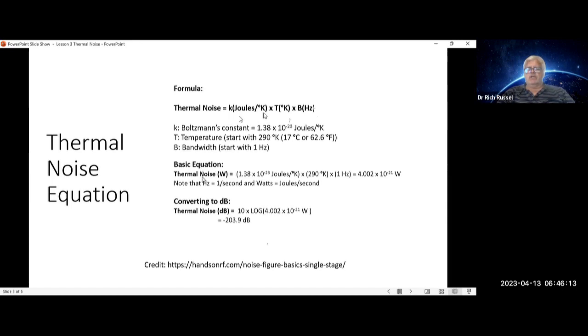So the basic equation result you get in watts is equal to 1.38 times 10 to the minus 23rd joules per degree Kelvin, times 290 degrees, times one Hertz, gives you about 4 times 10 to the minus 21 watts.